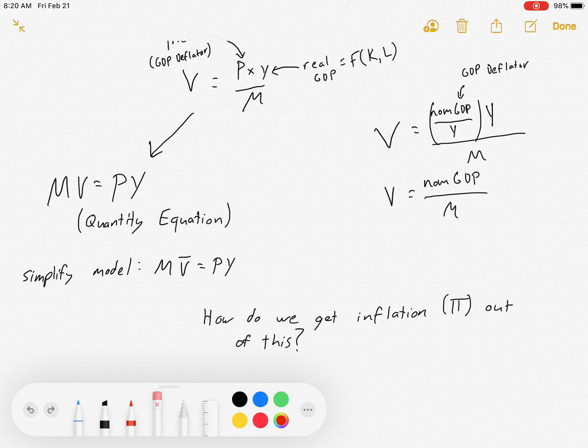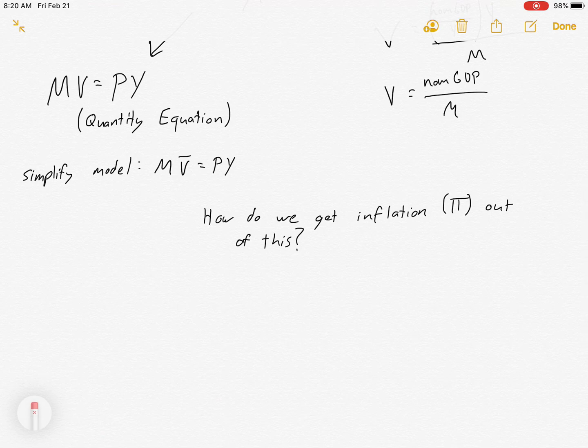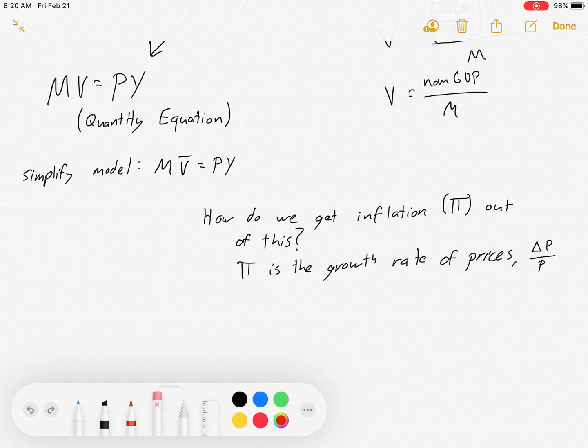So where does this lead us? Remember, our goal is to get inflation. We're trying to measure a link between the money supply and inflation. So what is inflation? Inflation is the growth rate of prices, delta P over P, the change in price divided by price.